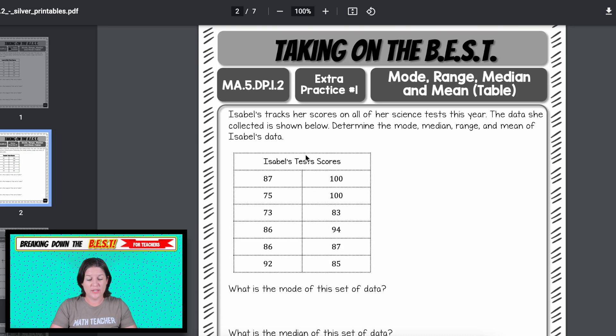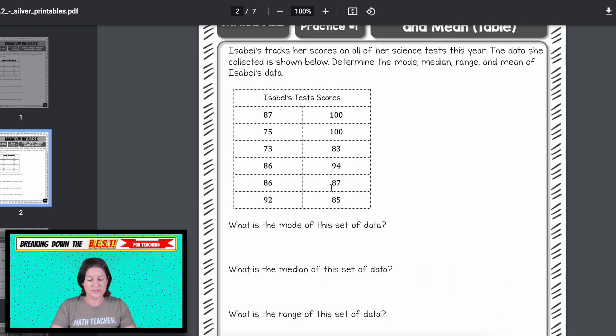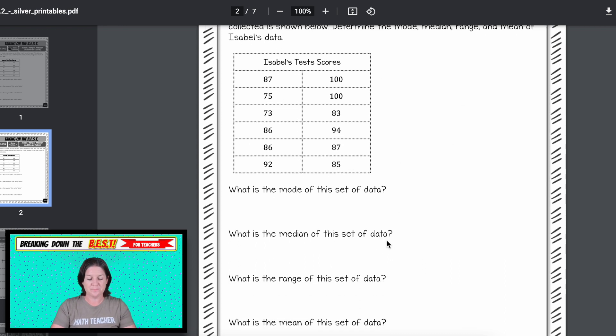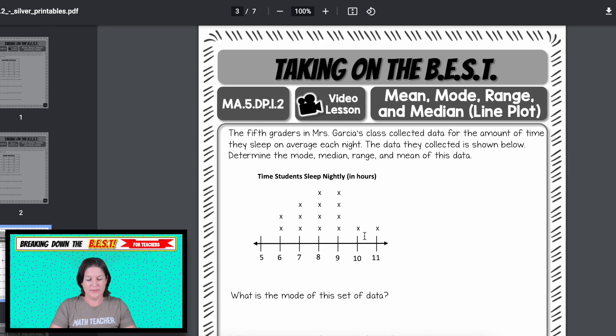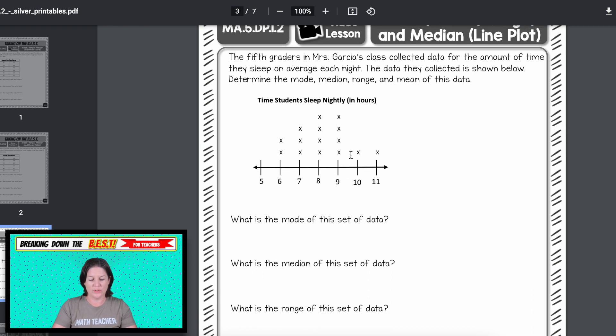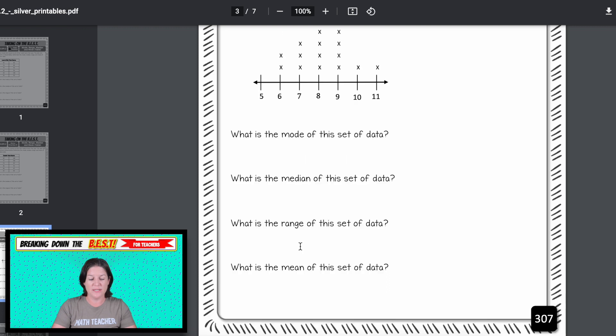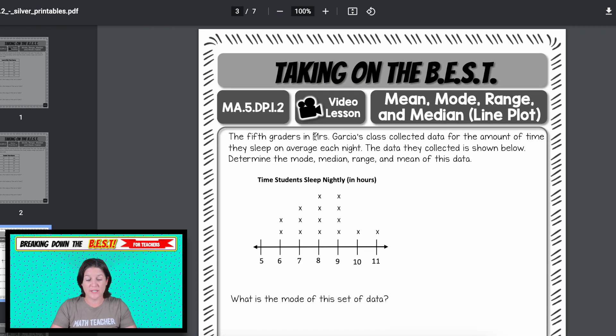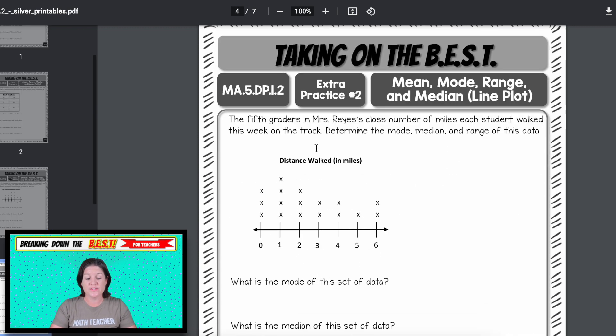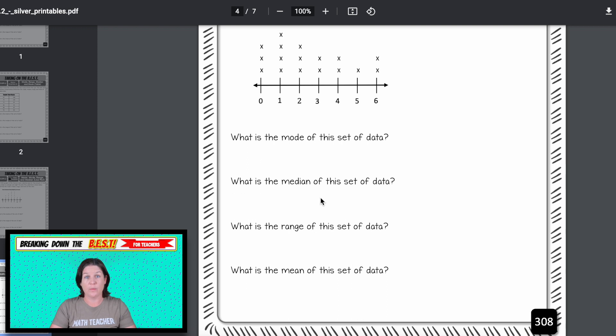And then after they watch the video, they can try the extra practice, which looks very similar. Now we have Isabel's science test scores. Same kind of thing. Take it off, answer the questions. The next video lesson is with the line plots. So we're looking at our line plot and determining the mode, the median, the range, and the mean in this video lesson. The one that follows is the extra practice looking very similar to what we just did, just a different scenario, different line plot, same kind of questions.